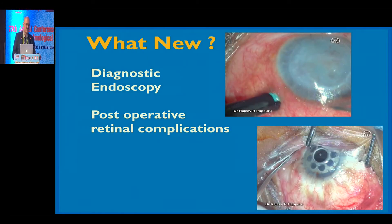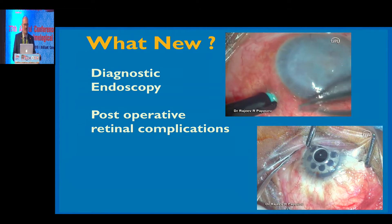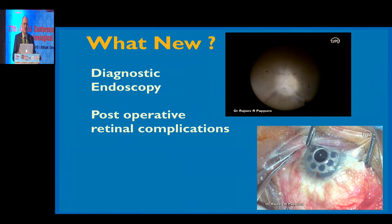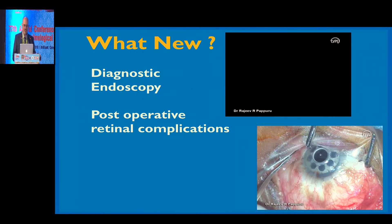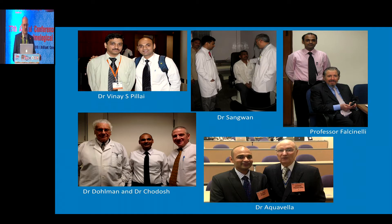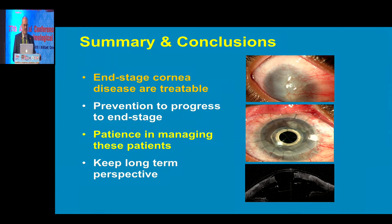An endoscopic vitreoretinal system is extremely beneficial for managing these end-stage eyes. It's an endoscope introduced through the pars plana that allows diagnostic endoscopy and management of vitrectomies, lensectomies, and complications of K-Pro. I suggest those interested in developing this practice should incorporate an endoscopic vitreoretinal system. We have been very fortunate to learn these techniques from the masters and teach others over the years. In summary, end-stage corneal diseases are treatable — there are many things you can do to prevent progression to the next stage, and it's very important to keep the long-term perspective in mind.